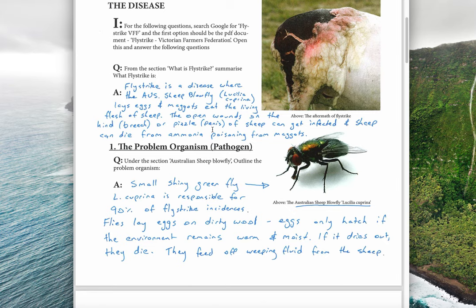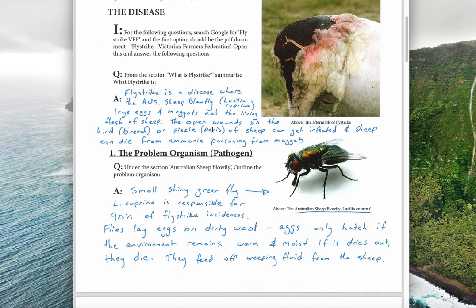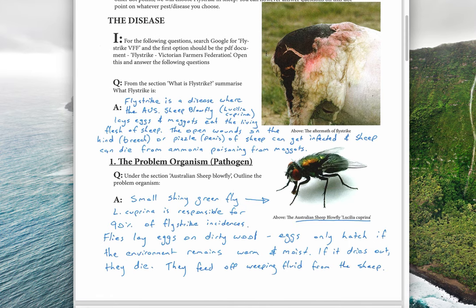Fly strike is worth about $280 to $300 million a year in Australia in terms of lost production, sheep that die, and the cost of chemical controls. If sheep, lamb, and wool is worth around $4 billion in Australia each year, we're talking 6–8% of the income from sheep is lost due to fly strike. So removing this problem is really important. The area at the back of the sheep is known as the breech, and it is particularly susceptible because it gets a build-up of feces and urine.